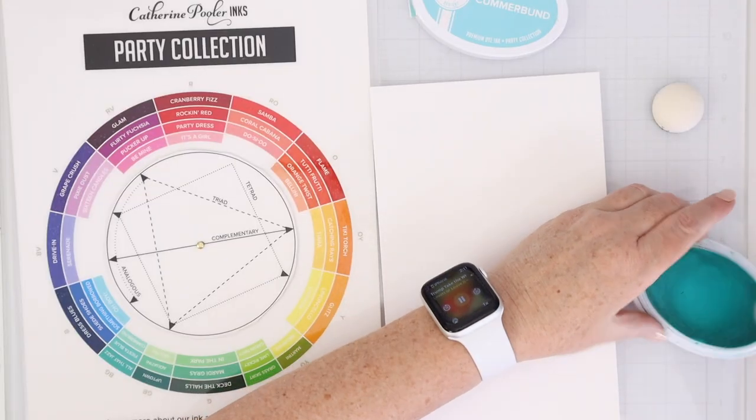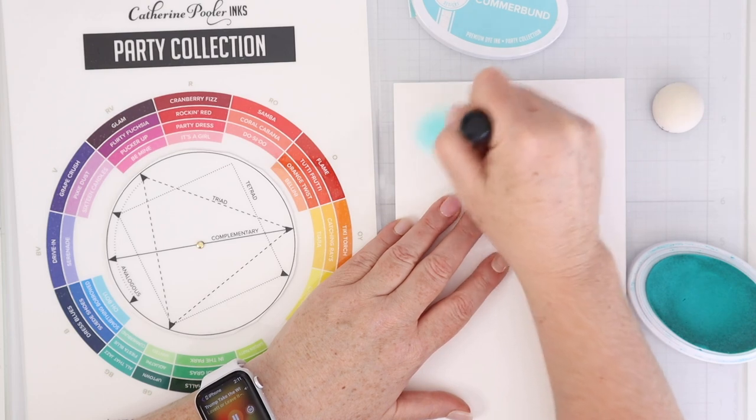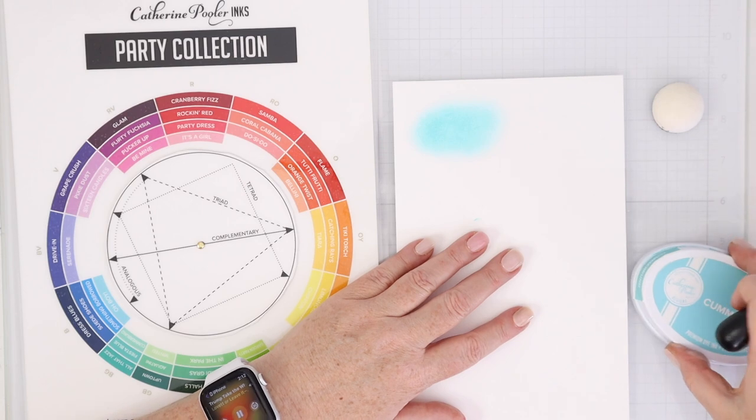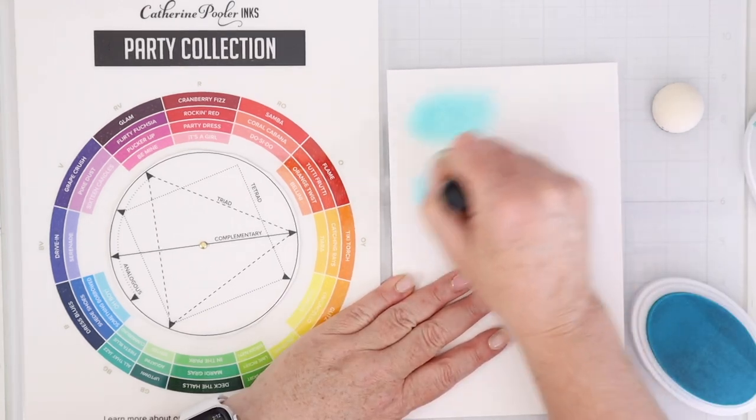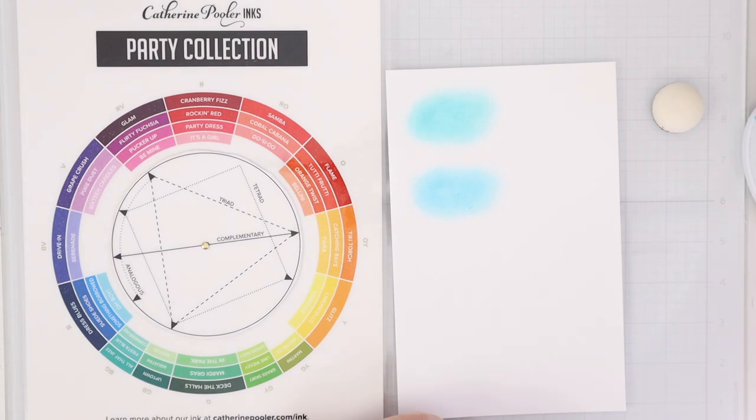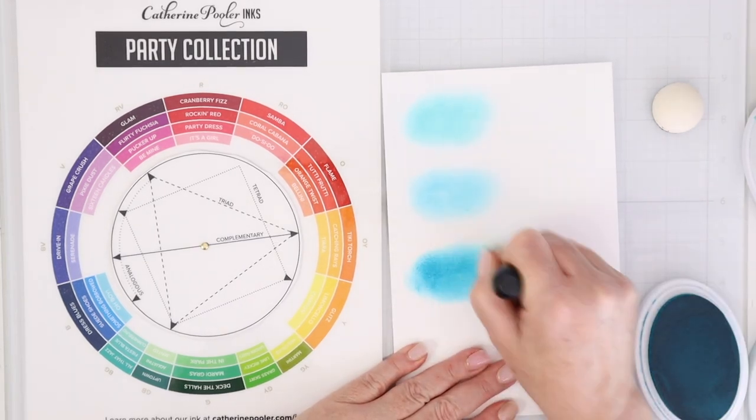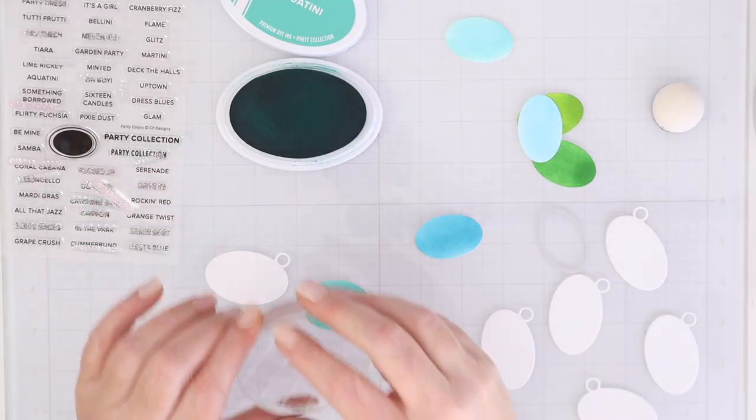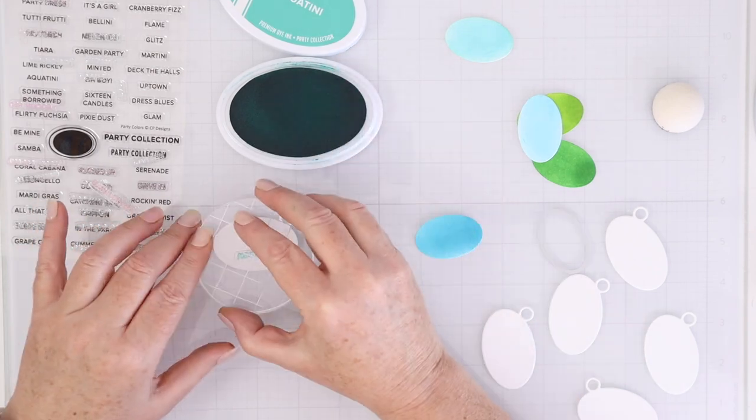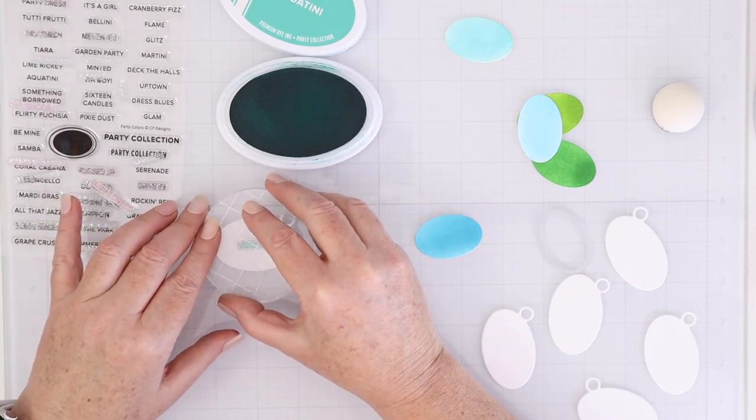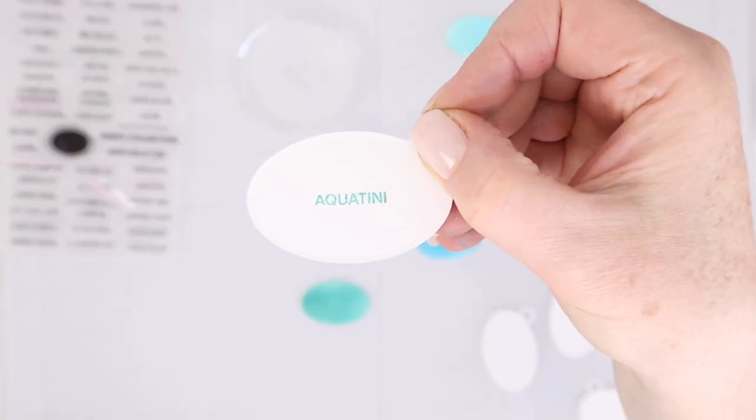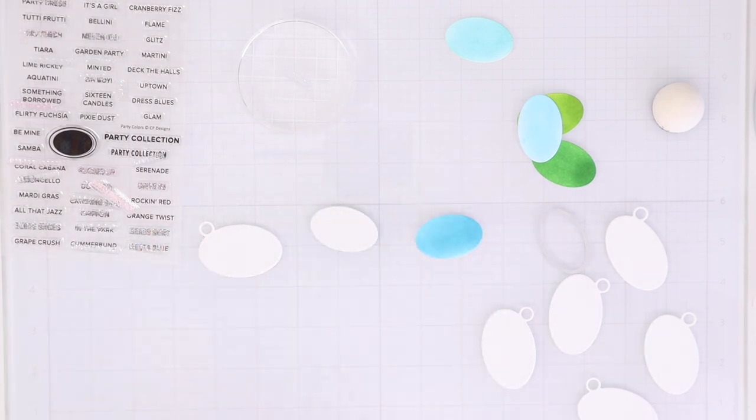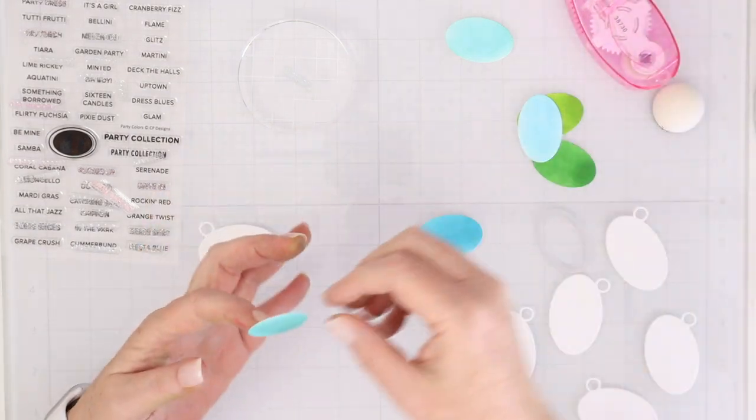I also wanted a swatch book of ink blended swatches because I love the way that Catherine Pooler inks blend. So I blended out all of the inks and then I used the swatch tag die to cut out that small oval, and then I cut out a bunch of white pieces of cardstock with the larger shape that has the little ring attached. On the back of that I used the same color to stamp the name using the spa or the party collection names stamp set, and then I just adhered the little swatch to the front.